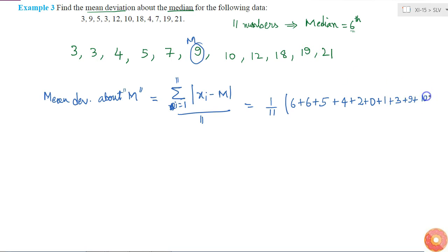12 plus 5 equals 17, 17 plus 4 equals 21, then 23, 24, 27, 36, 46, 58. So this equals 58 by 11. This is my mean deviation about median.